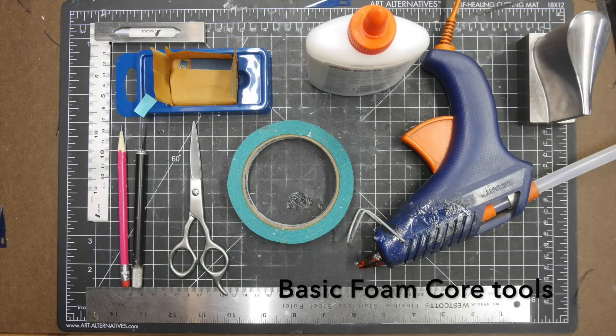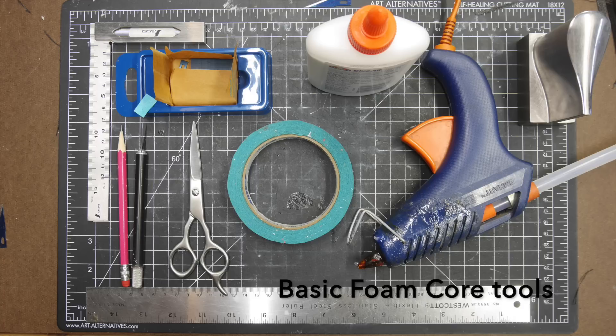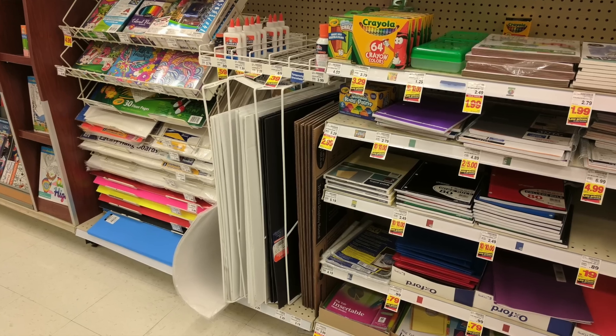Here's some good basic tools that you'll definitely need for this. A good steel ruler, some very sharp blades, some white glue, a good cutting board, and of course some foam core.